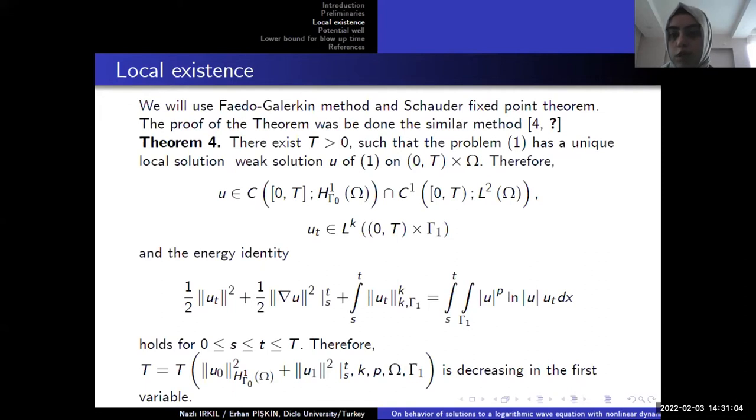I say again, the Faedo-Galerkin method will be used. And we try to give an approximation solution for local existence. And then we say the norms of these approximation solutions are bounded. So that we can extend T from Tm to T, and we can have local existence.